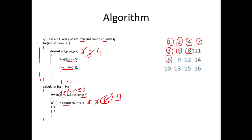The condition is satisfied again, and at a[3][2] we insert 9, then count becomes 10, i becomes 4, j becomes 1. The condition is true, so at position (4,1) we initialize with count, that is 10. Count becomes 11, i becomes 5, j becomes 0 — the condition is false. And so on, the array is completed and all elements are inserted. If you like the video please subscribe and like — it will be really helpful. Keep supporting, thanks.